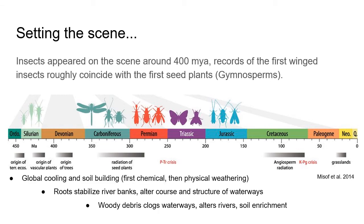We think about large events that were affecting the climate and affecting the overall physical structure of the earth. Around the time of terrestrial plants first evolving, we had global cooling and that first soil building. At first it would have been chemical, where we have metabolic acids being produced by these organisms that are interacting with the rocky surface, and then we get physical weathering once we start to develop roots. Those roots, which develop when we get lignified vascular tissue, are going to be changing the way that water flows around the planet — stabilizing riverbanks and altering the course and structure of waterways, allowing waterways to carve deeper as opposed to spreading out across the surface.